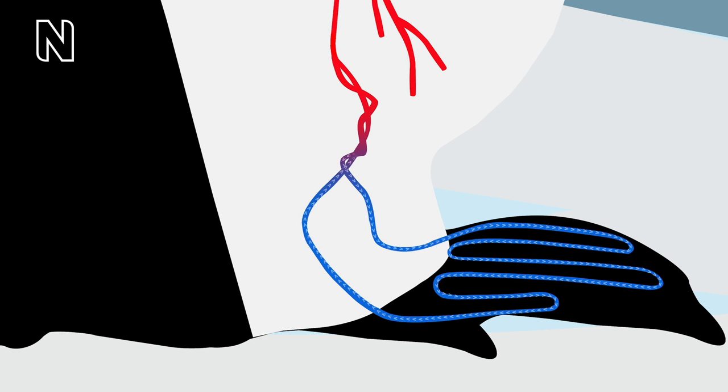The blood vessels carrying warm blood down from their body wrap around those coming back up, transferring heat to the cold blood flowing up from their feet.